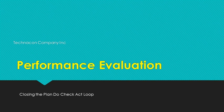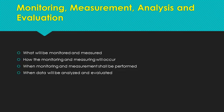Hello folks, this is Sherry Gallagher with Technicon Company again, and we are going to be looking at Section 9 of ISO 9001-2015. Section 9 is Performance Evaluation. Here is where we close the Plan, Do, Check, Act loop and bring feedback to top management to make important decisions on planning resources, support, and operations. The first section we're going to look at is Monitoring, Measurement, Analysis, and Evaluation.